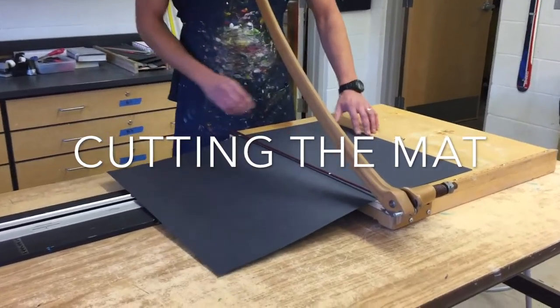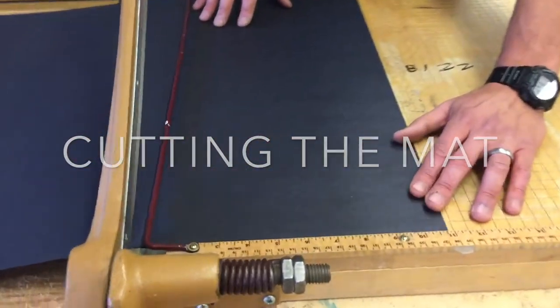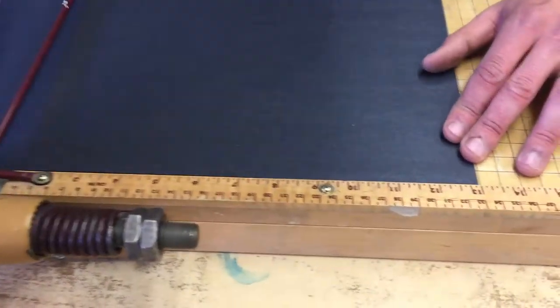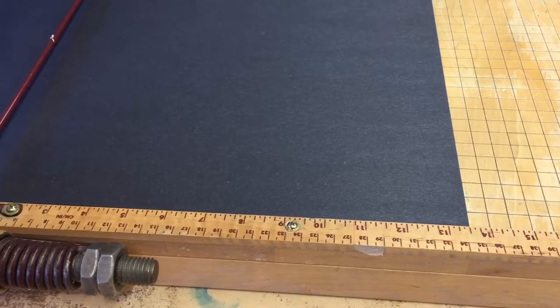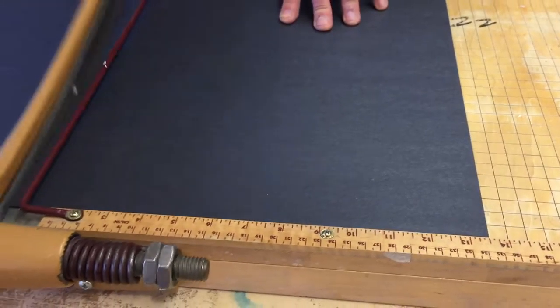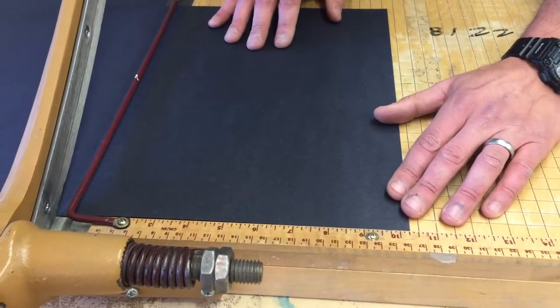So I'm going to come over here on the paper cutter. I'm going to cut one length at ten, sorry, thirteen and a half. Is that what I had? This is why I have a plan, so I can reference it. And then the other dimension at ten and a quarter, like so.